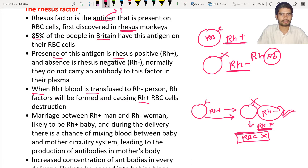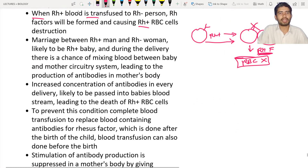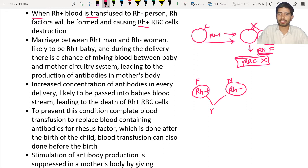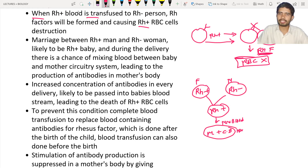An Rh positive person should not donate blood to an Rh negative person. Next, marriage between an Rh positive man and an Rh negative woman is likely to produce an Rh positive baby. During delivery there is a mixing of the child's blood with the mother's blood. Since the mother has Rh negative blood, as a result, Rh antibodies will be produced inside the mother's body.